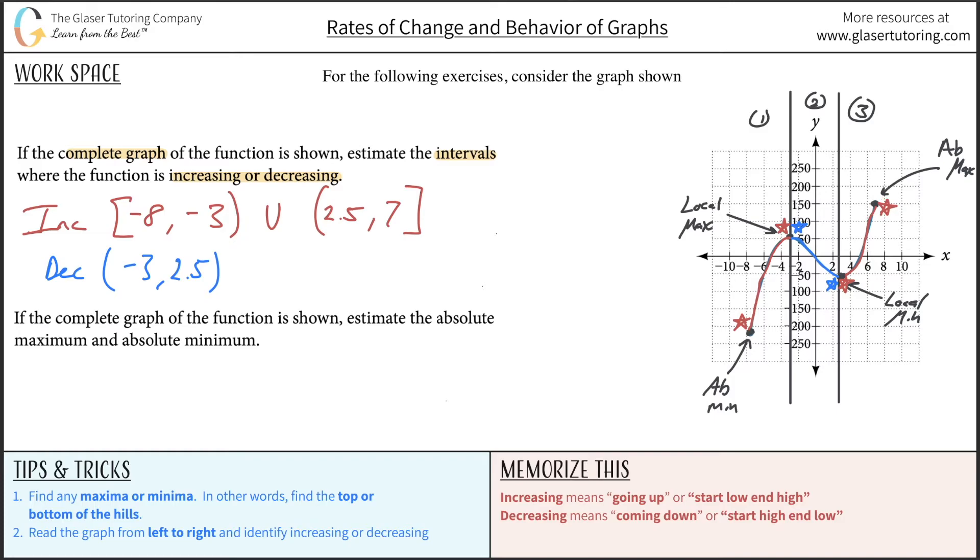So now, taking a look at the second question, it says, if the complete graph is shown, estimate the absolute maximum and absolute minimum. So we basically already did that. I already spoke about that. So that's the benefit. We answered the second question already. Here's the absolute minimum. Here's the absolute maximum. And let me just label then the max point. It appears that the graph goes, the x value there is about 7, and it appears that it's going to go out to about 150.